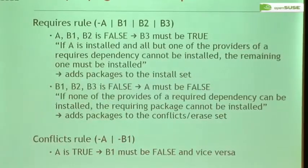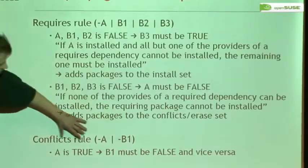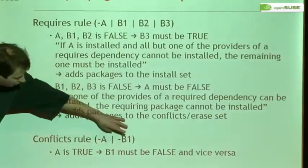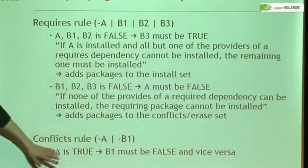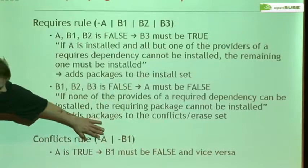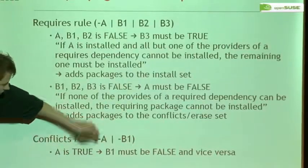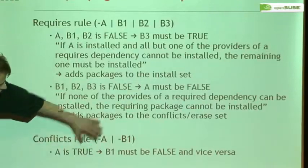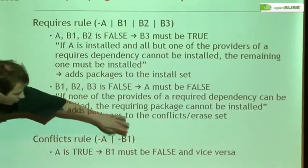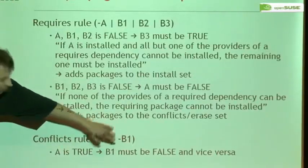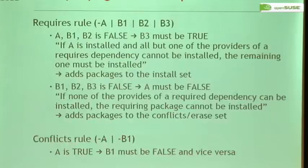Conflict rules are easy to understand: if A conflicts with B, and A is true — meaning A is installed — then B1 must be forced to false, meaning not installed. This is pretty straightforward.